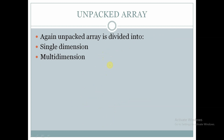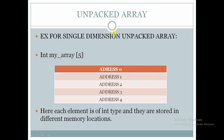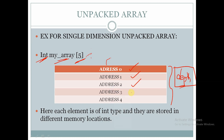Unpacked arrays are also differentiated into two types: single dimensional and multidimensional. For a single dimensional unpacked array, the data type is declared, followed by the name of the array, then the dimension. There are a total of five memory locations — each element is stored in different memory locations: element 1, element 2, element 3, element 4, element 5, and element 6. This is not contiguous. Whereas in packed arrays, each element is stored in the same contiguous memory location.